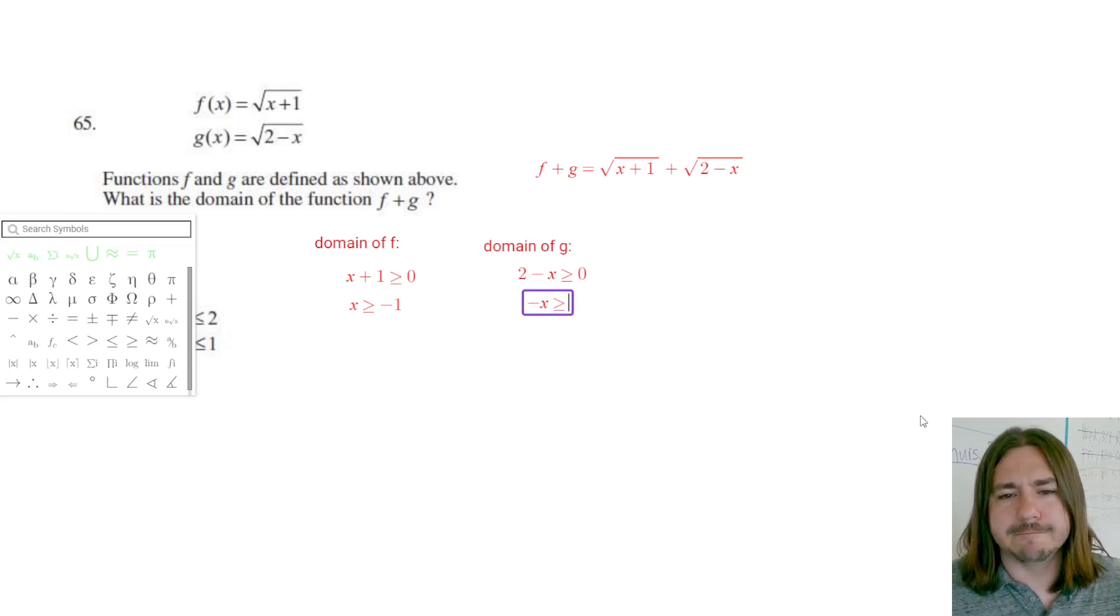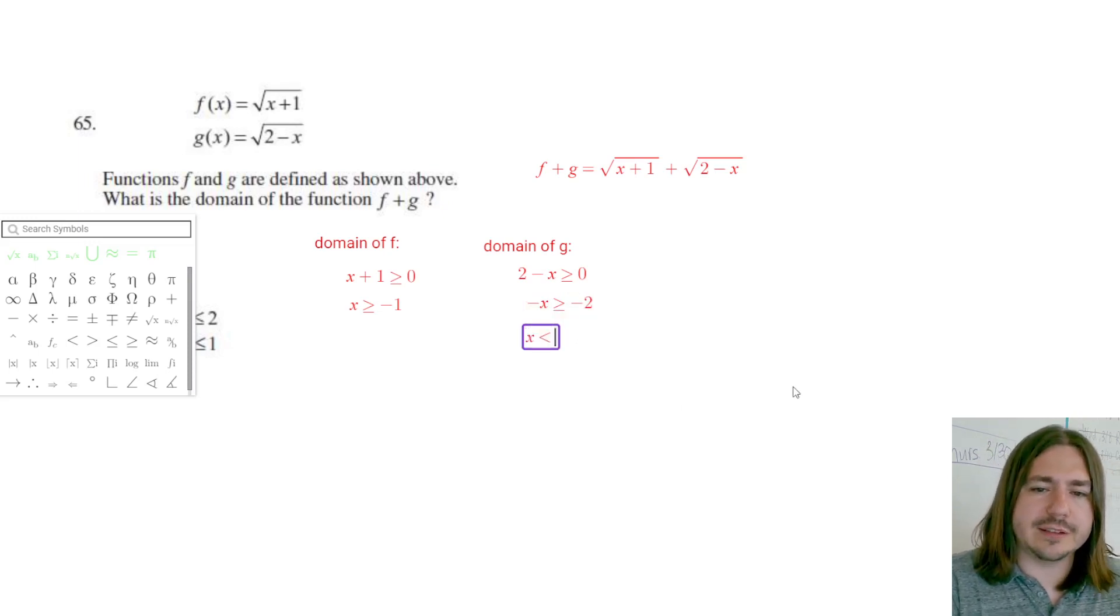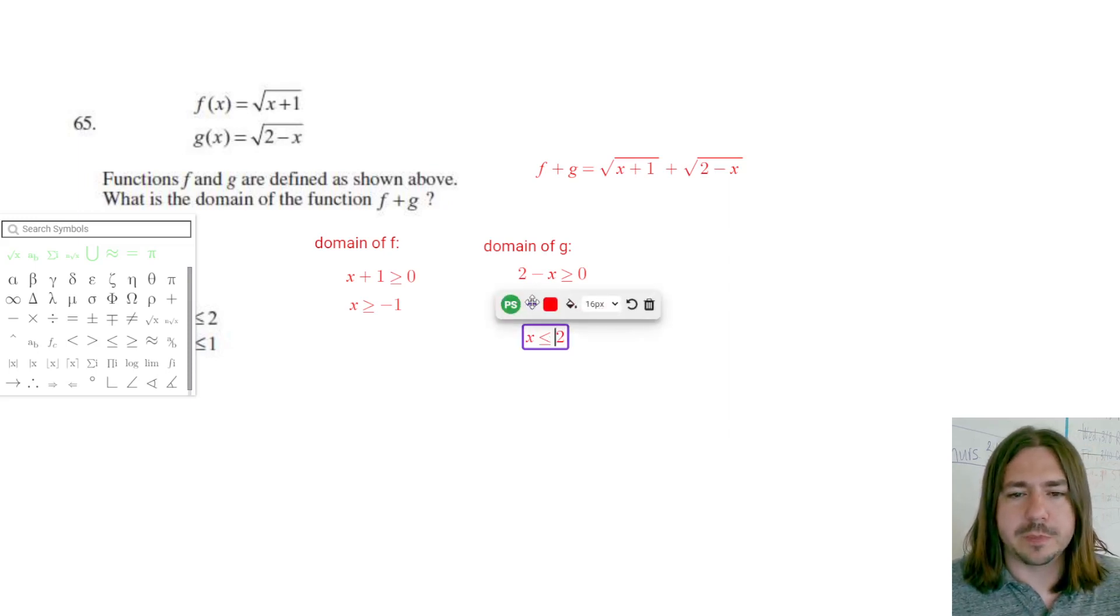And then if I divide both sides by negative 1, I'll get x is actually less than or equal to 2. Anytime you divide both sides of an inequality by a negative, you've got to flip this inequality symbol. So here's our domain of g.